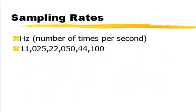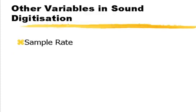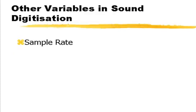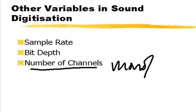The most common levels at which you sample are 22,000 and 44,000. The other variables are: sample rate — how often you sample; bit depth — whether it's 8-bit, 16-bit, or 24-bit; and the number of channels, which simply means mono, stereo, or 5.1.